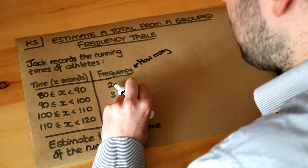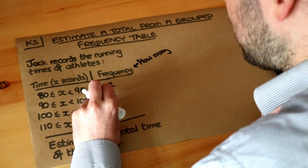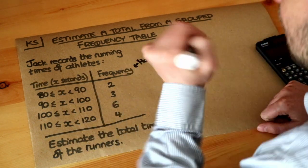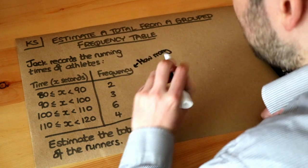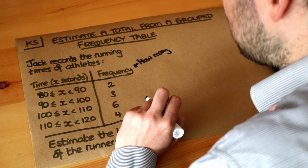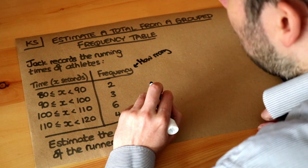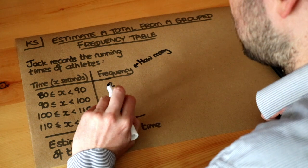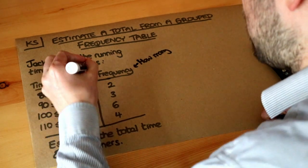Now these two athletes, we know they had a time somewhere between 80 and 90, but we don't know what those times were. But what would be a sensible guess, like on average, of what each of those athletes' time was between 80 and 90 seconds? Well, it might be helpful to just assume the middle of that range. So 80 to 90, the middle of that range would be 85.